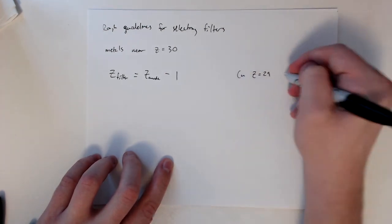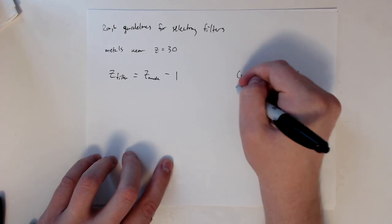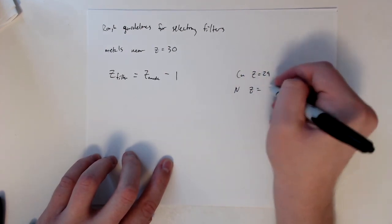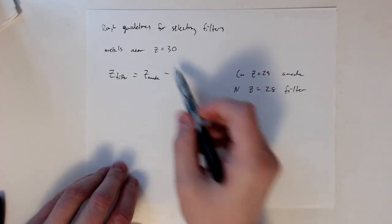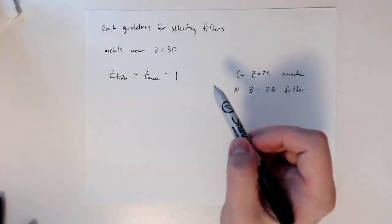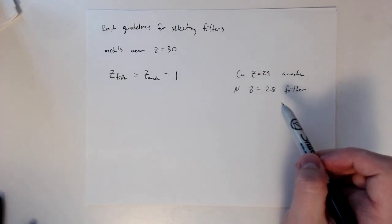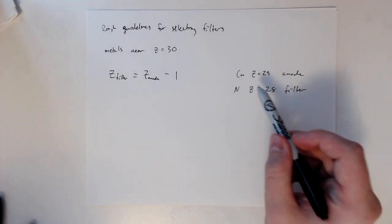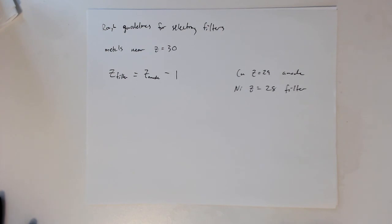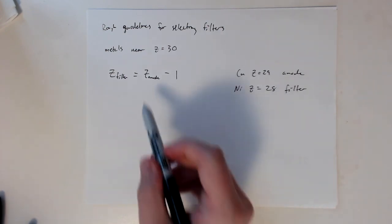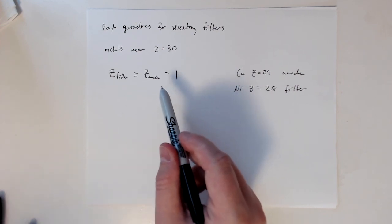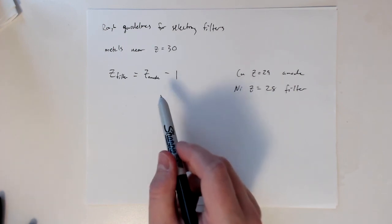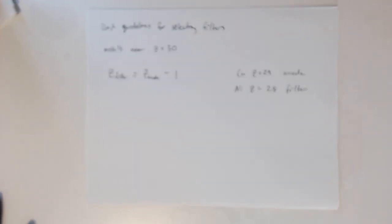This is how we get that copper, atomic number 29, is our anode, and nickel, atomic number 28, is our filter. When you're looking around 30, this is the relationship we have. You can look at pairs of elements that are very close together, within one atomic number, and that's how you select and connect the filter.